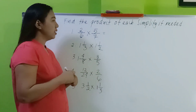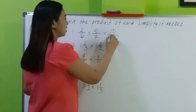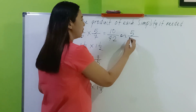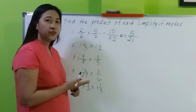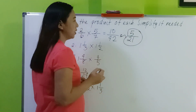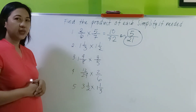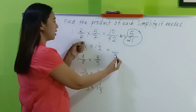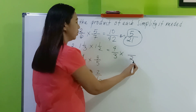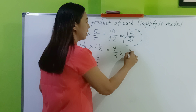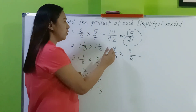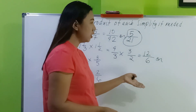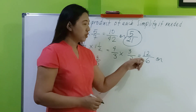Let's check your answers. Number 1: multiply the numerators — 2 times 5 is 10; 6 times 7 is 42. Reduce: 10 divided by 2 is 5, 42 divided by 2 is 21. Can you simplify further? No. The answer is 5/21. Number 2: change to improper fractions — 3 times 1 is 3, plus 1 is 4; copy the denominator. 2 times 1 is 2, plus 1 is 3. Multiply: 4 times 3 is 12, 3 times 2 is 6. Since 12 divided by 6 equals 2 exactly, the final answer is 2.